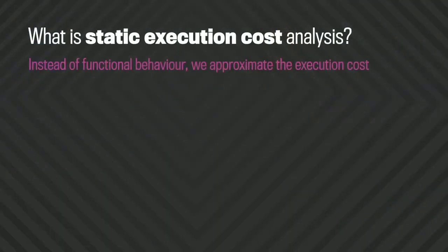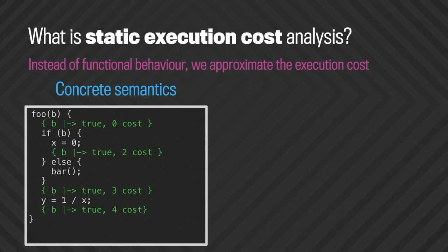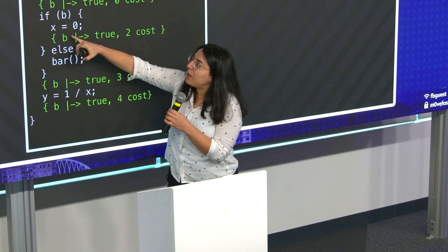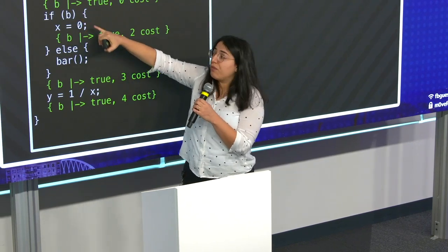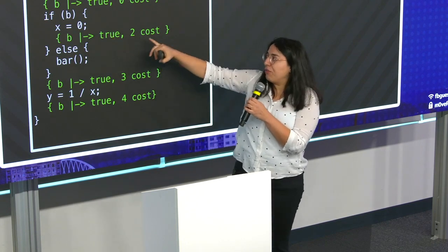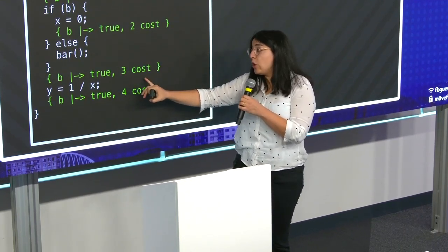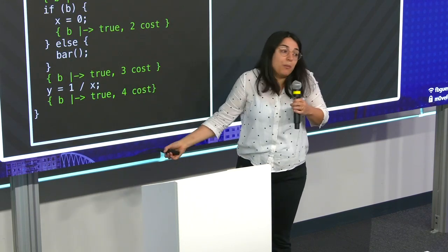What about static execution cost analysis? In static execution cost analysis, we are not just interested in functional behaviors of programs, but also execution costs. I have the same program, just slightly modified. In the else branch, I have some function called bar. For simplicity, let's assume every instruction takes a unit cost. Then we say at the beginning we have zero cost, we haven't run anything. In the then branch: one cost for the if, one cost for the assignment — two costs. At the end, we accept the condition — three costs, and finally four costs. Some constant costs. This is a straight-line program.